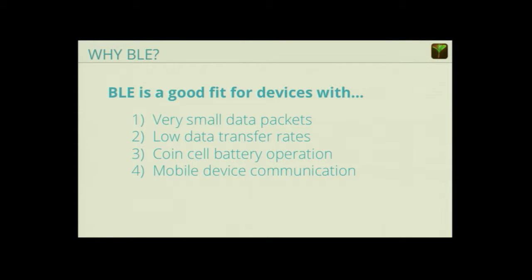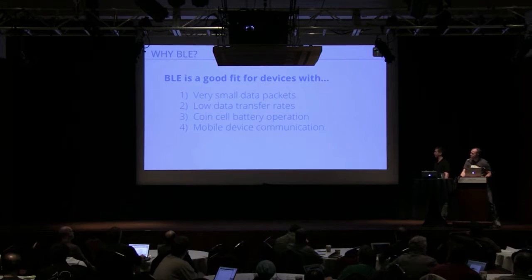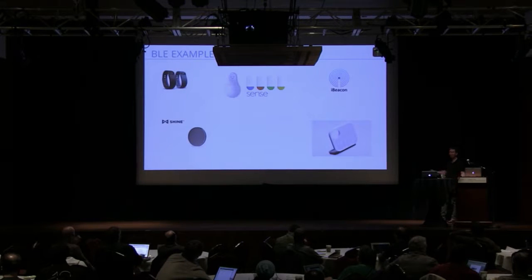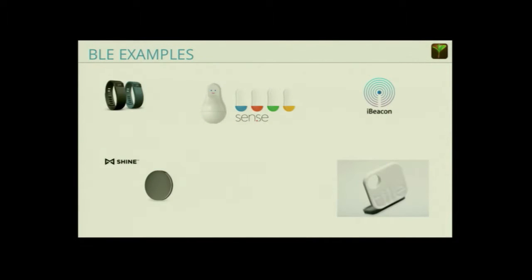That makes BLE a really good fit for situations where you have a device with very small data packets to send — like a temperature sensor, or in the case of the Copenhagen Wheel, you only need a couple of bytes to say how fast your bike is going. You don't need a big data transfer rate, so a few kbps is totally fine. You really don't want to have to change batteries or recharge often, and coin cell battery operation is perfectly acceptable with BLE devices. And with BLE radios in iDevices, these things easily talk to mobile. Even Android devices are coming out with BLE radios now.